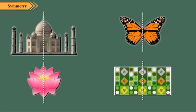Symmetry can be observed all around us. We can see symmetry in man-made as well as natural things. We can see symmetry in monuments, insects, flowers, leaves, designs, etc.